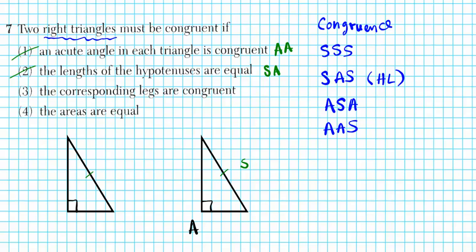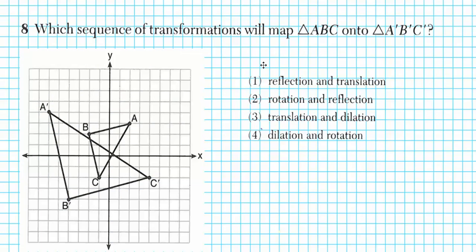For option 3, the corresponding legs are congruent. A right triangle has two legs — the vertical leg of one triangle is congruent to the vertical leg of the other (that's S), and the horizontal leg of one corresponds to the horizontal leg of the other (another S). So for option 3 we have SAS, which is a valid congruency postulate. Option 3 is correct.